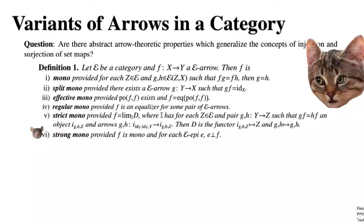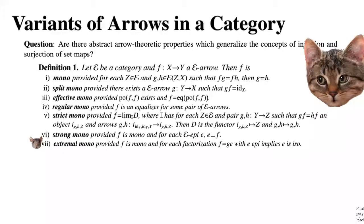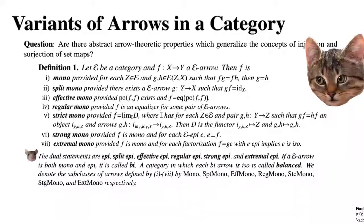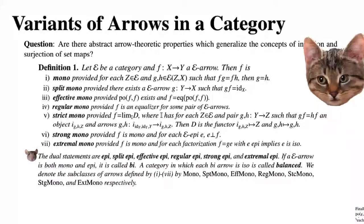Finally, F is extremal mono provided that F is mono and for each factorization F = GE with E epi, E must be iso. We then have the dual statements — flip all the arrows around — giving epi, split epi, effective epi, regular epi, strong epi, and extremal epi.